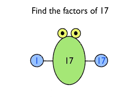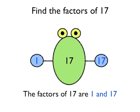I can't think of 2 times something, 3 times something, 4 times something and so on that multiplies together to make 17. Actually this factor bug has just got two legs. That's okay. The factors of 17 are just 1 and 17. It does only have two factors.